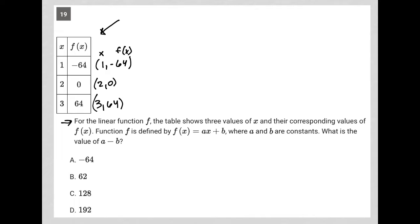The question goes on to say for the linear function f, the table shows three values of x and their corresponding values of f of x. Function f is defined by f of x equals ax plus b. I'm going to write that down. This looks a lot like y equals mx plus b. In fact, it's exactly the same in terms of format and structure. So that means a and m are the same, so a must be our slope, and b is our y-intercept.